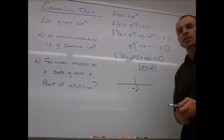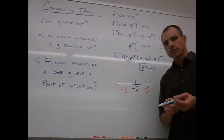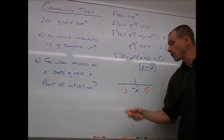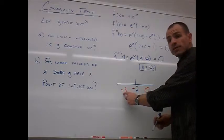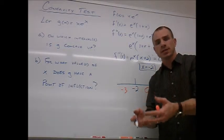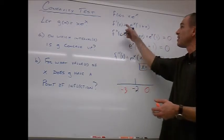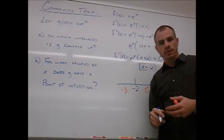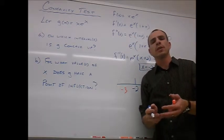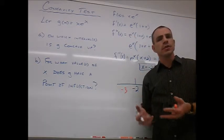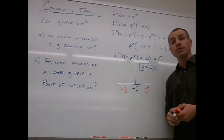We place x = −2 on the number line and pick test values on each side — let's use −3 and 0. These should work well. We'll plug these into the second derivative — the concavity test requires values go into the second derivative, not the first or the original function. I recommend using the most simplified form, e^x(x + 2), to make life as easy as possible.